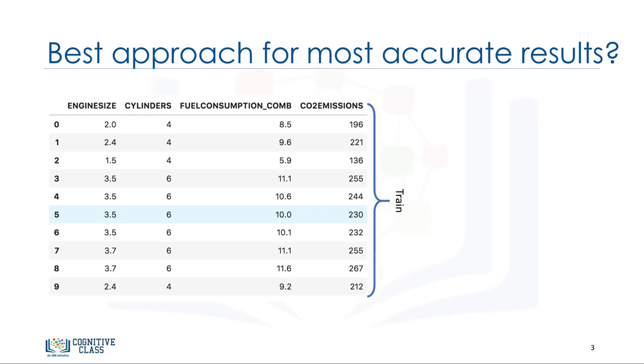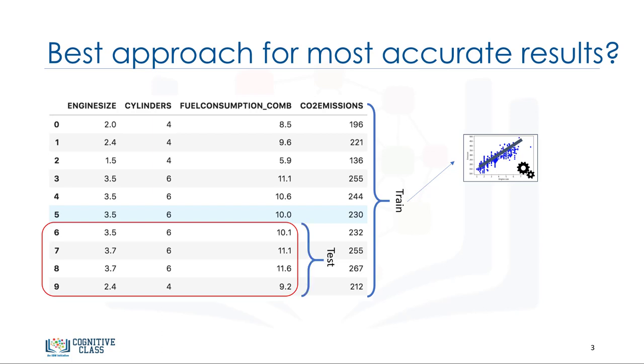One of the solutions is to select a portion of our dataset for testing. For instance, assume that we have 10 records in our dataset. We use the entire dataset for training, and we build a model using this training set. Now, we select a small portion of the dataset, such as row number 6 to 9, but without the labels. This set is called a test set, which has the labels, but the labels are not used for prediction and is used only as ground truth. The labels are called actual values of the test set.